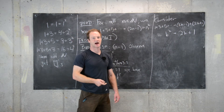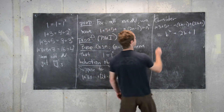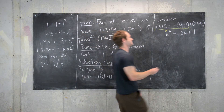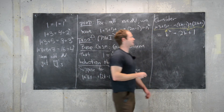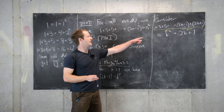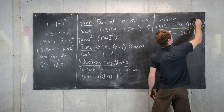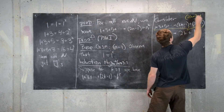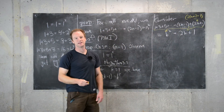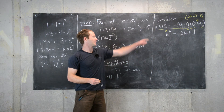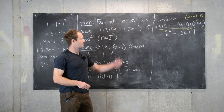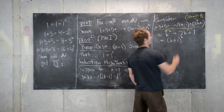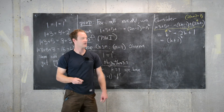We used the induction hypothesis to replace the first k terms with k squared, and brought down the remaining term (2k plus 1) unchanged. It's also worth noting that 2k plus 1 equals 2(k plus 1) minus 1, confirming this is indeed the (k plus 1)th statement. Now k squared plus 2k plus 1 is clearly a perfect square — we can write it as (k plus 1) squared, which ends the proof.